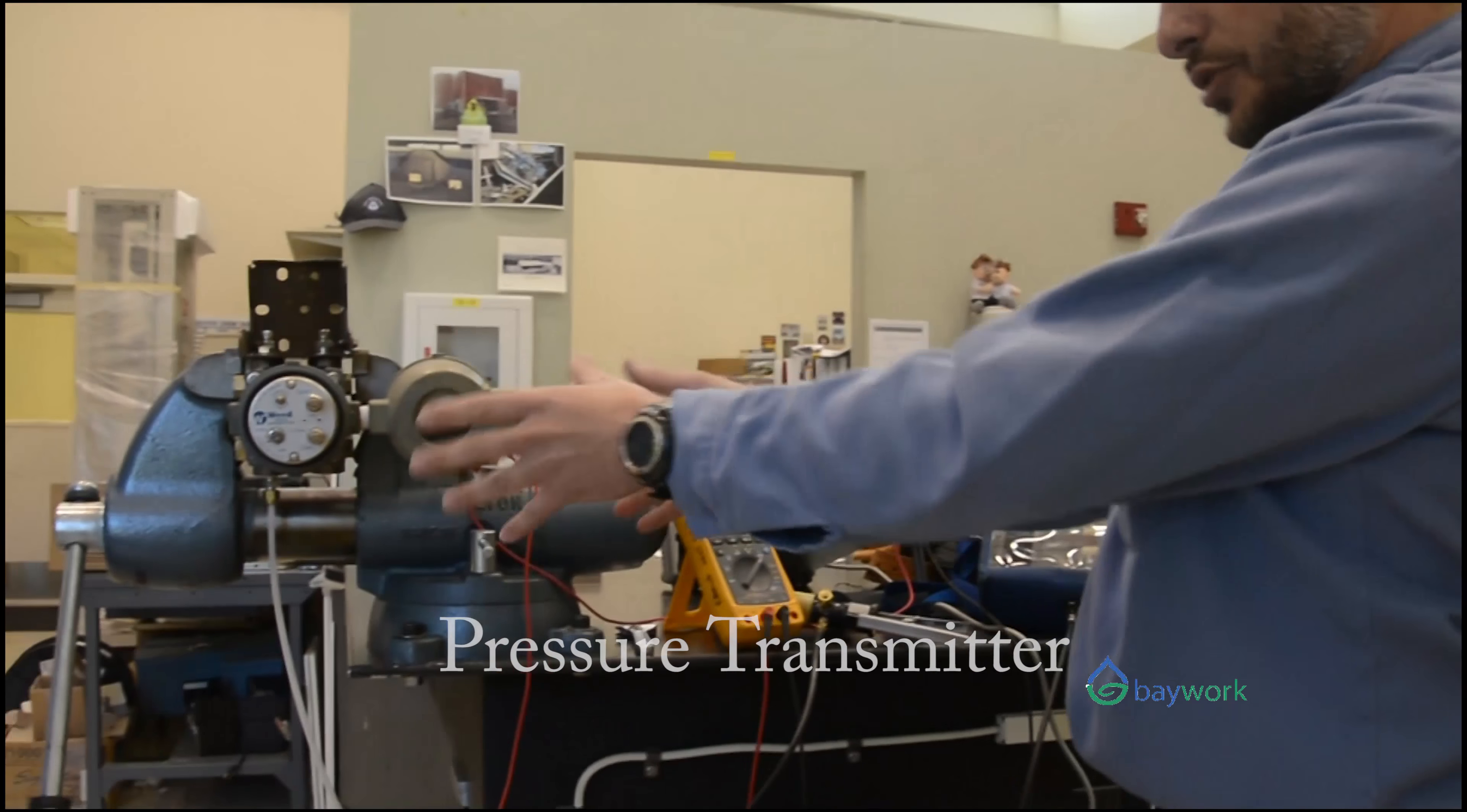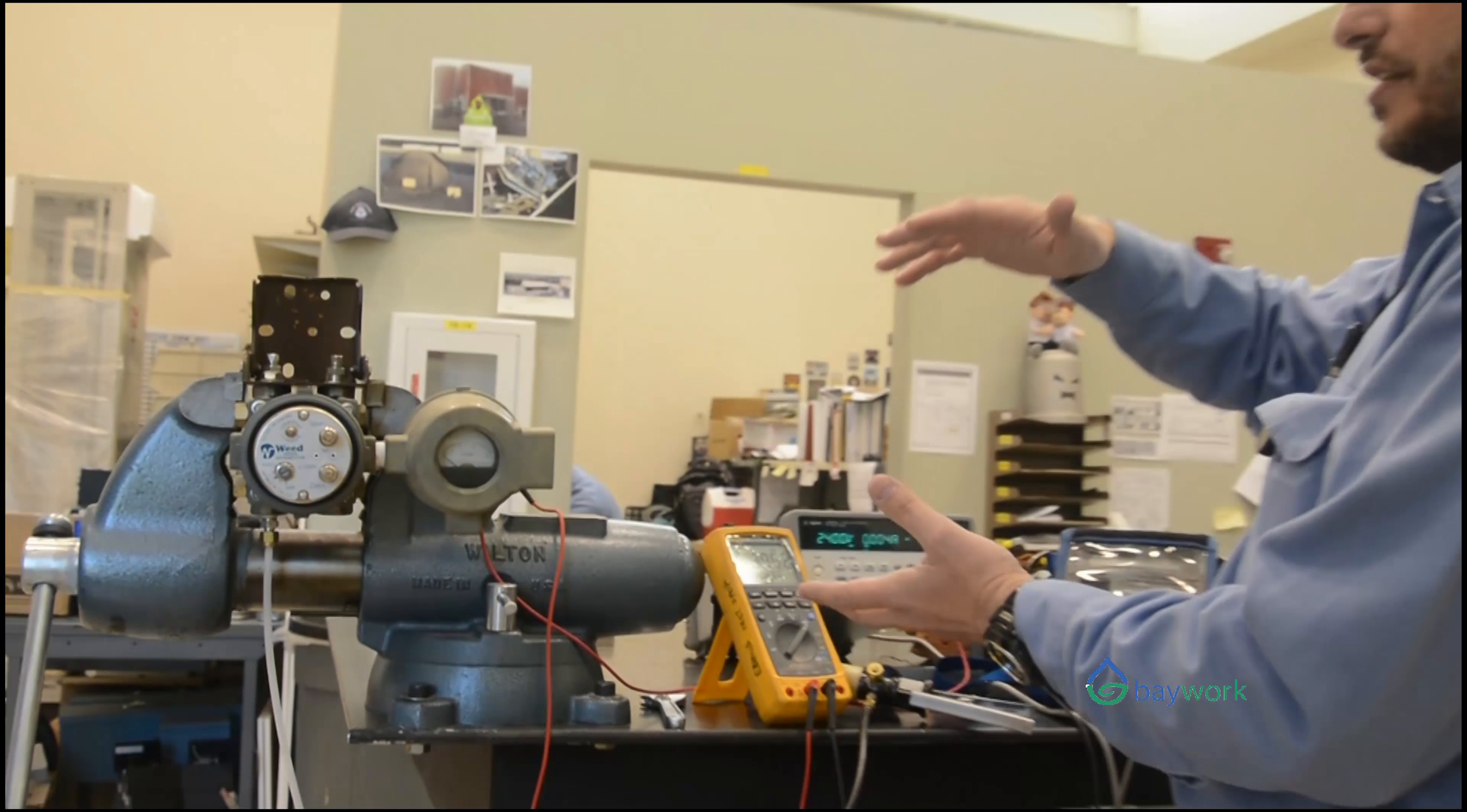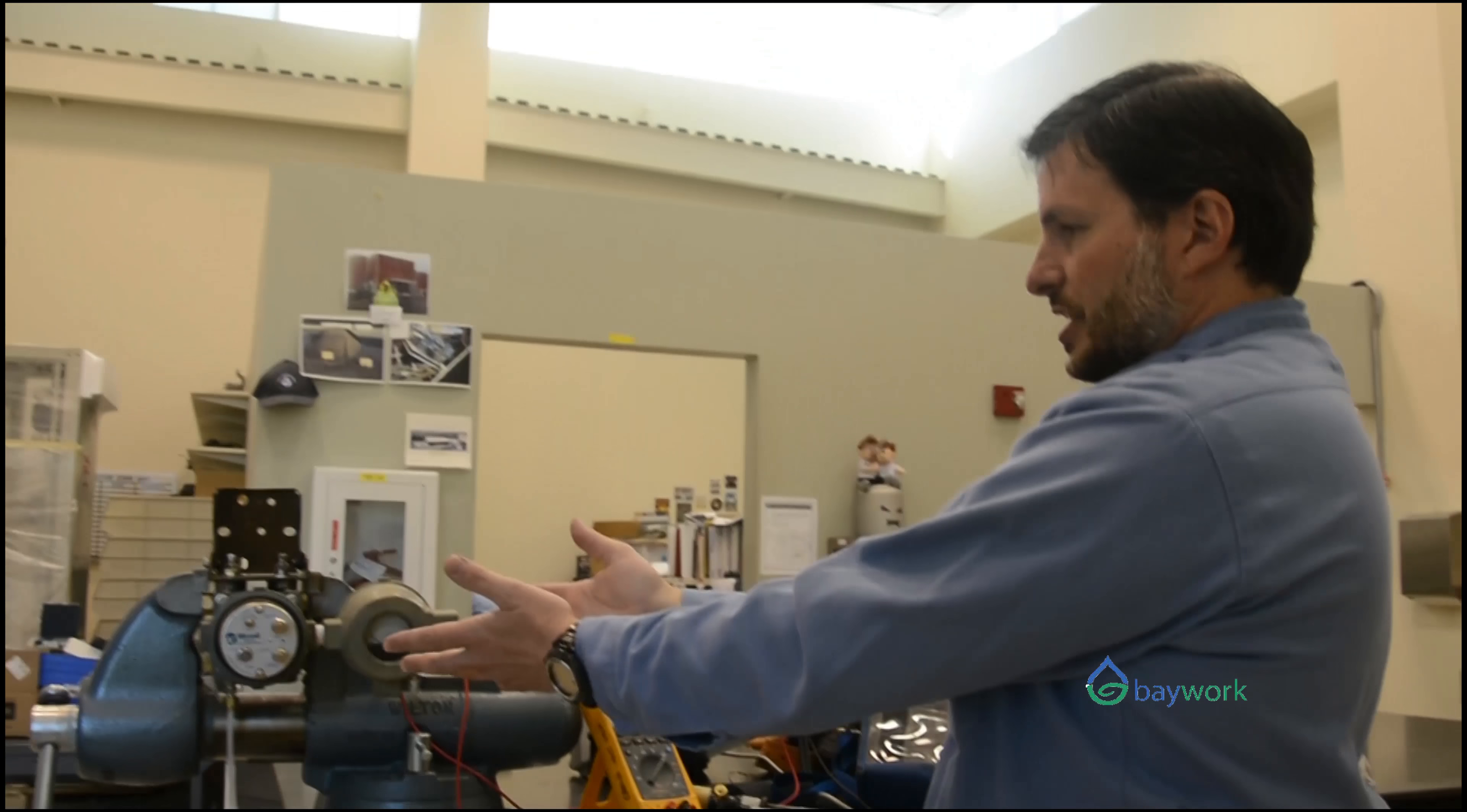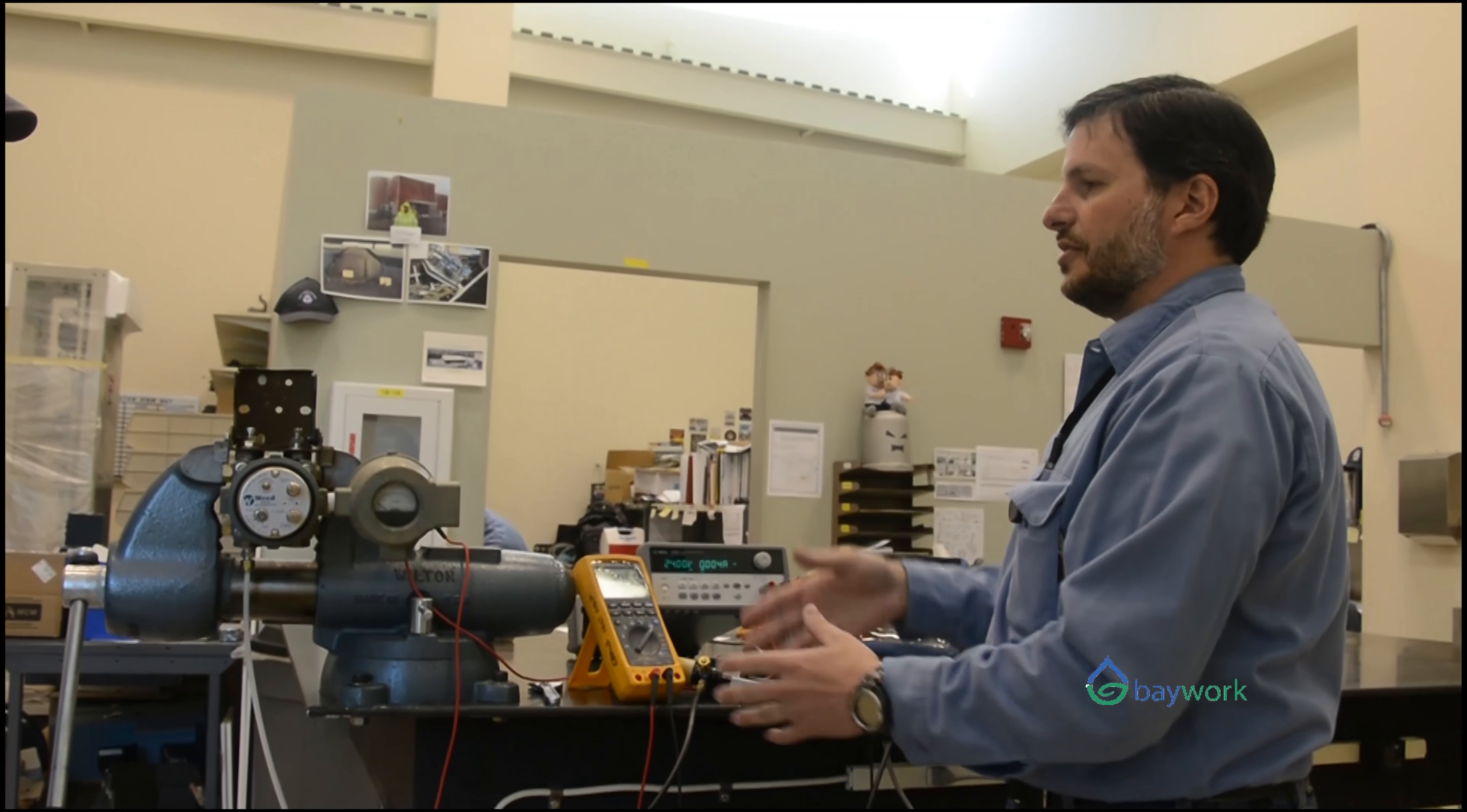This is actually a pressure transmitter, right? Right. And what we're doing is measuring levels. So the transmitter is seeing pressure at the bottom of the tank and the higher the level of the tank, the more pressure it's going to see. Right. So the transmitter is going to be converting that into a milliamp current signal. That's why you've got this milliamp meter and the power supply there.